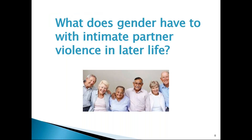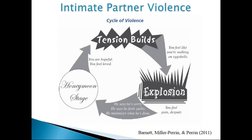I get this question sometimes when I talk about this issue to the general public: what does gender have to do with intimate partner violence in later life? This is the type of abuse we are focused on today. Intimate partner violence is a cyclical type of violence where tension builds, there's a violent episode, then the honeymoon stage, and this cycle continues and often intensifies over time.